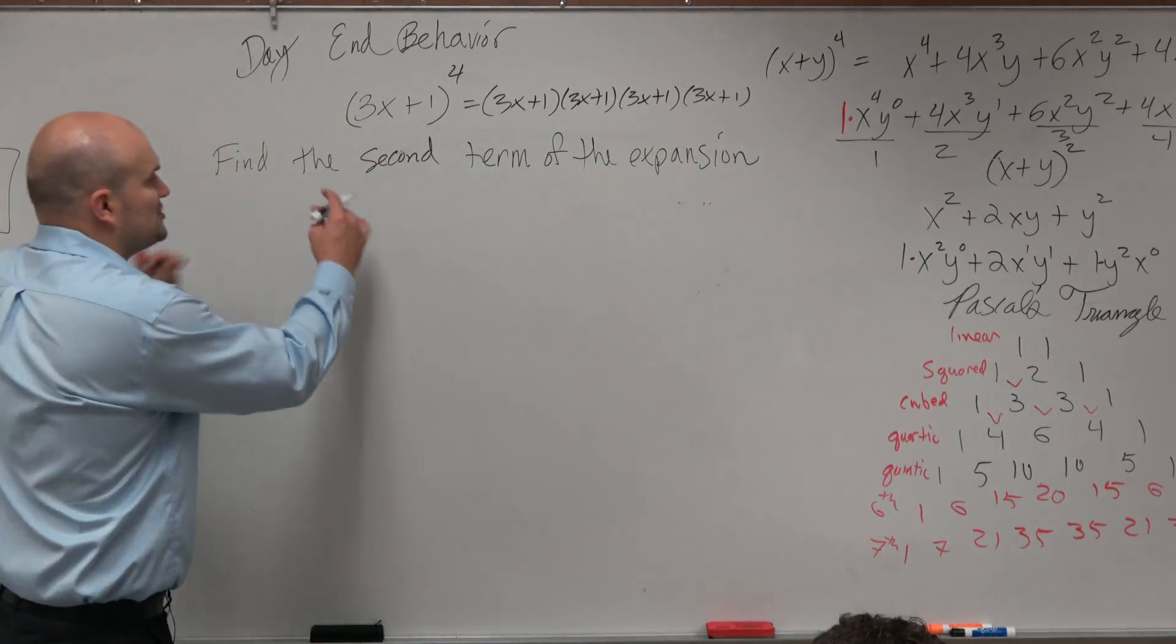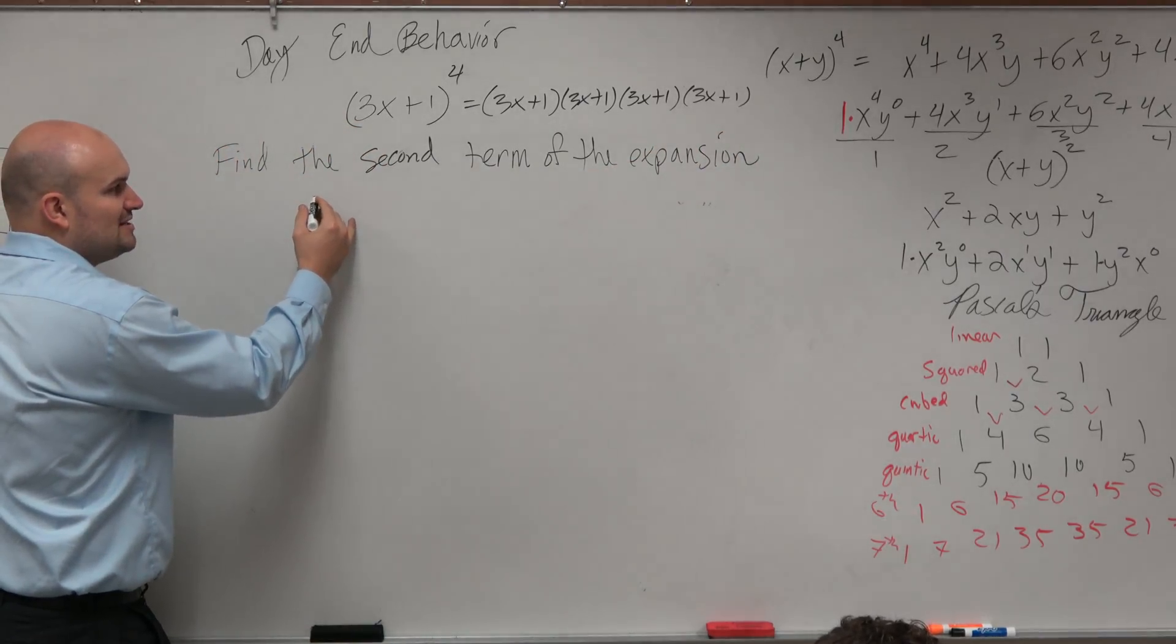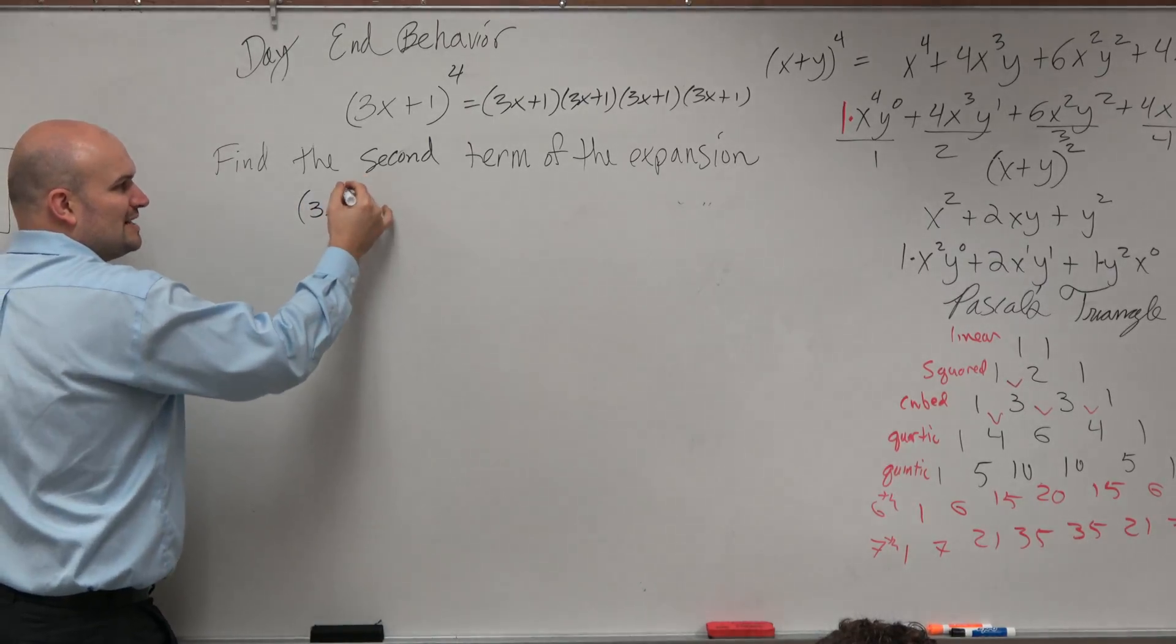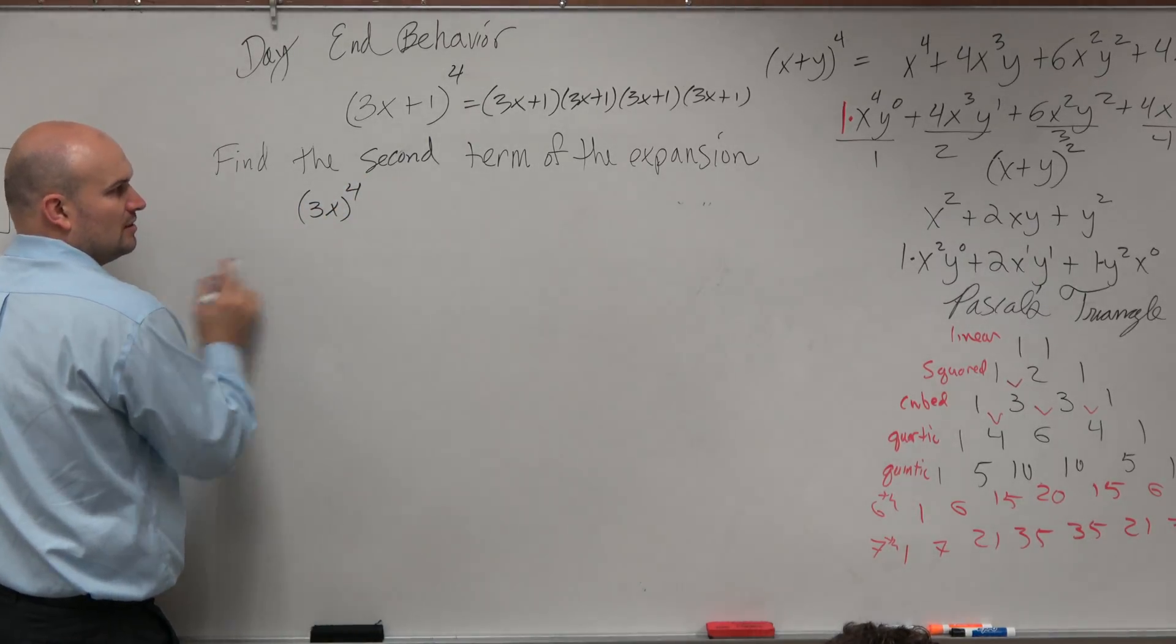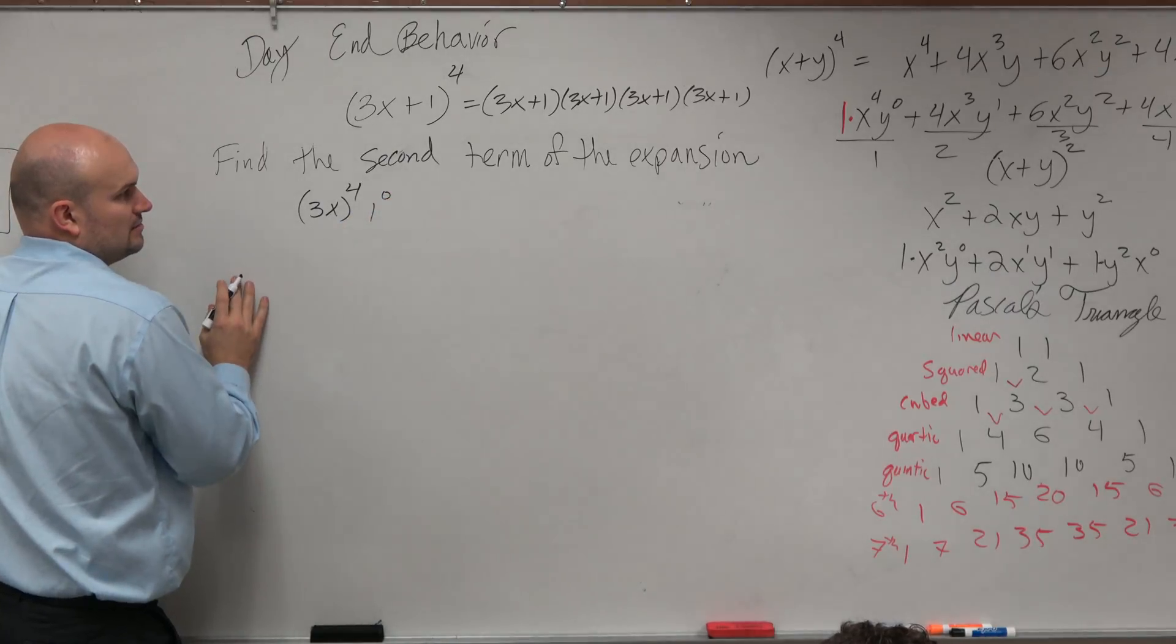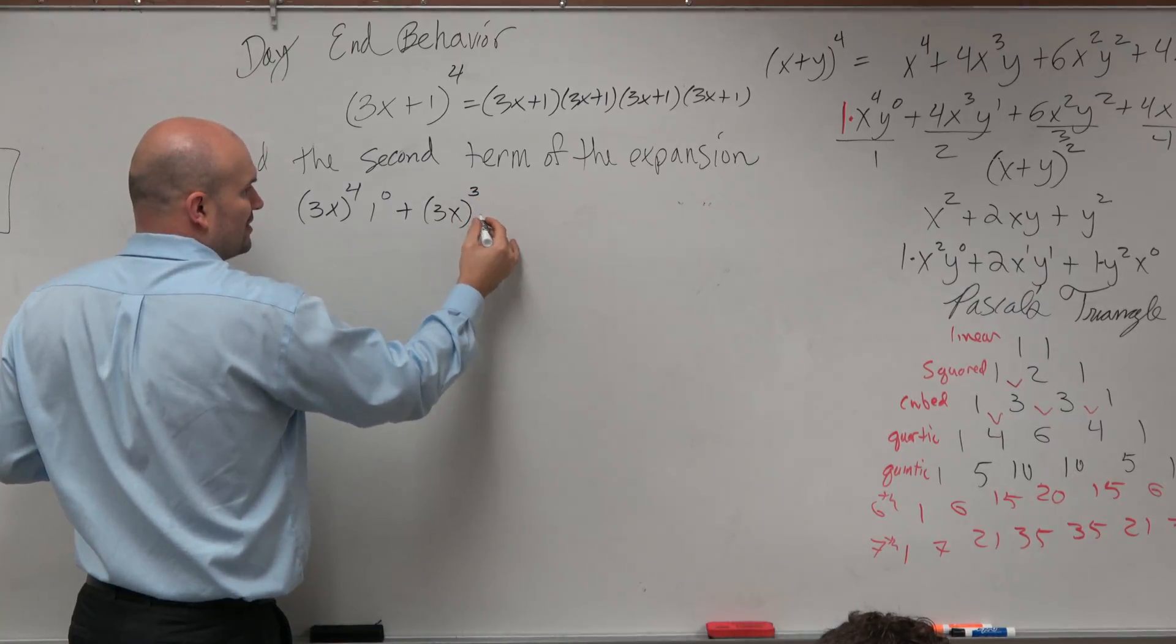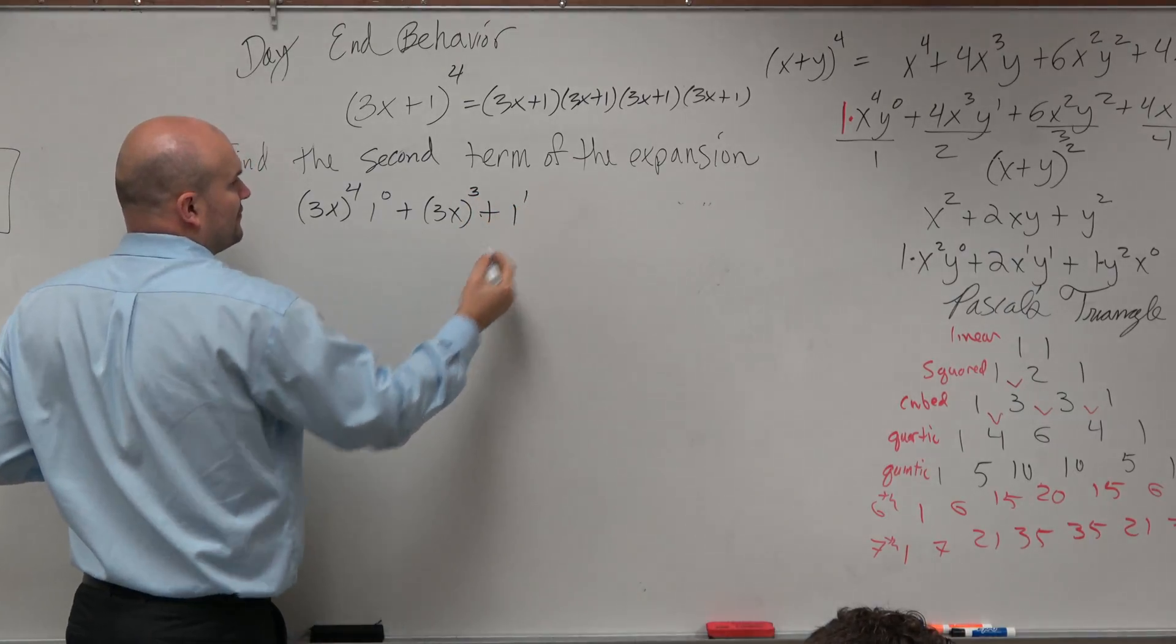Four times. The first term, which I mean by using parentheses, the first term is 3x. That's 3x to the fourth power, 1 to the 0, plus 3x to the third power, plus 1 to the first power.